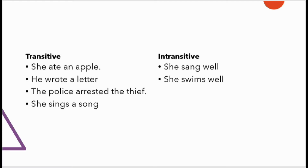These are transitive verbs. For instance, 'she sang well,' 'she swims in the pond.' We call these — an apple, a letter, the thief — we call them objects.